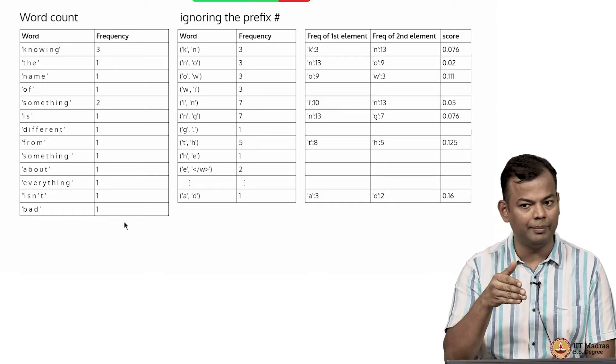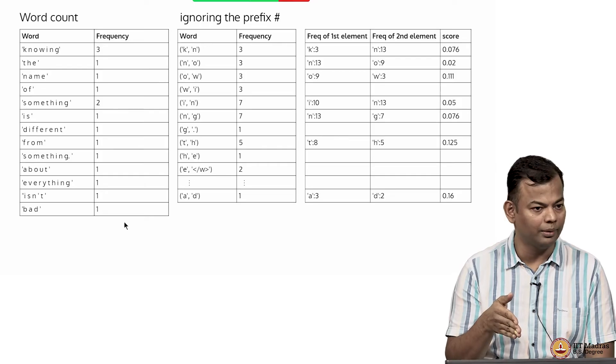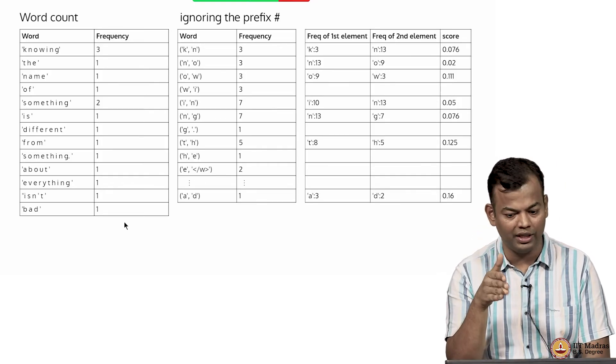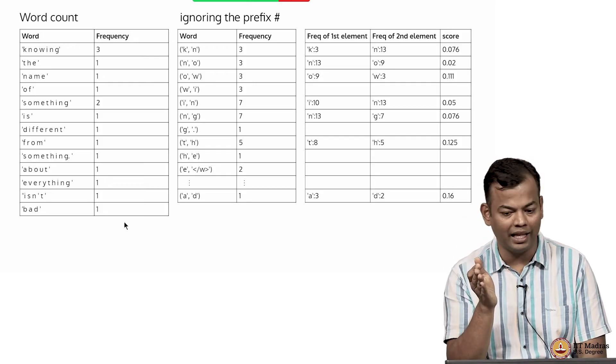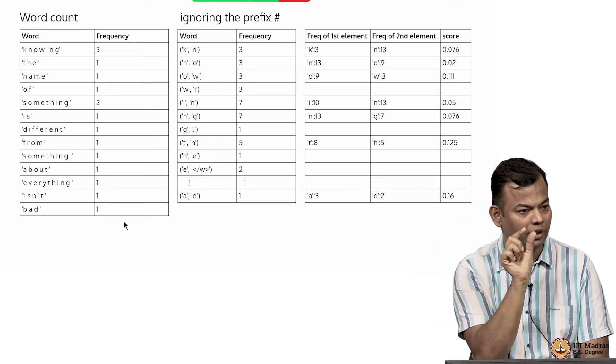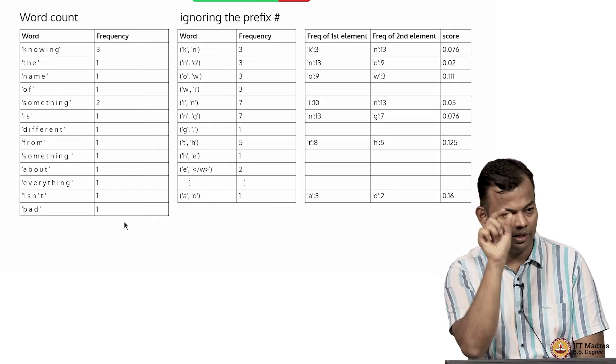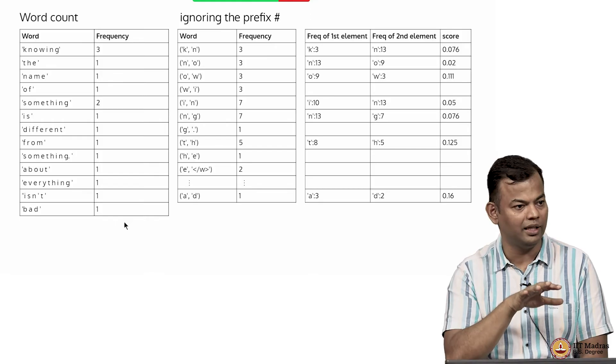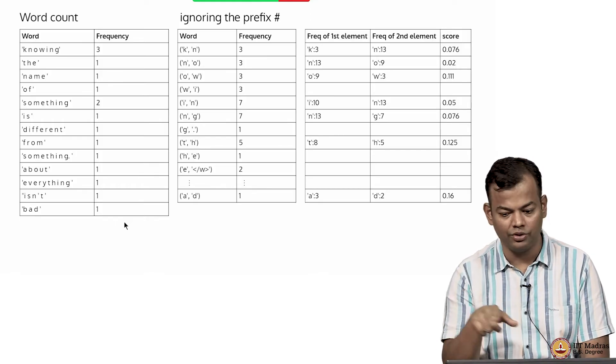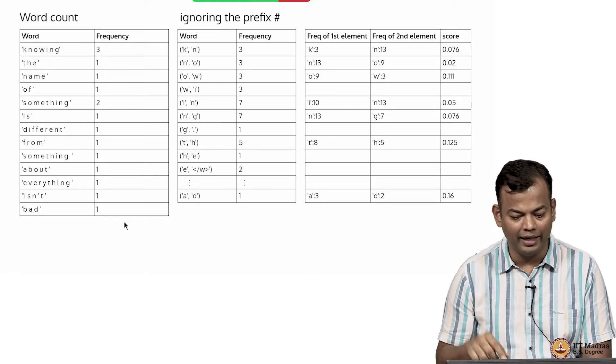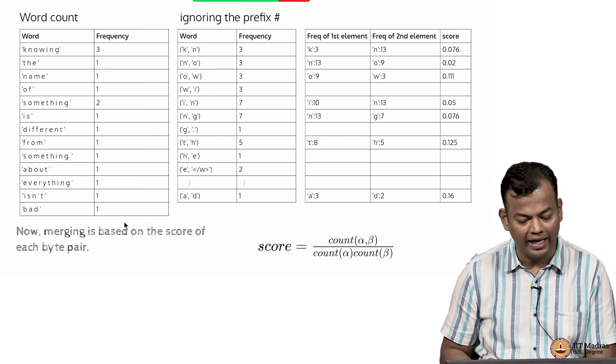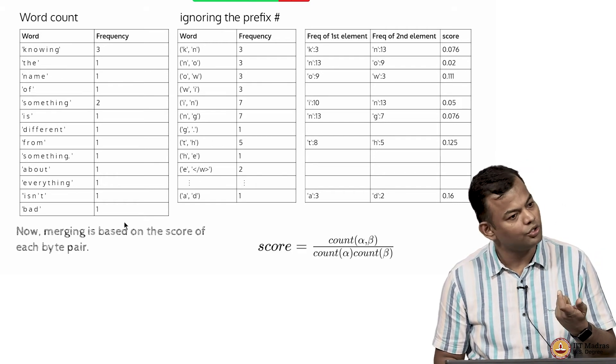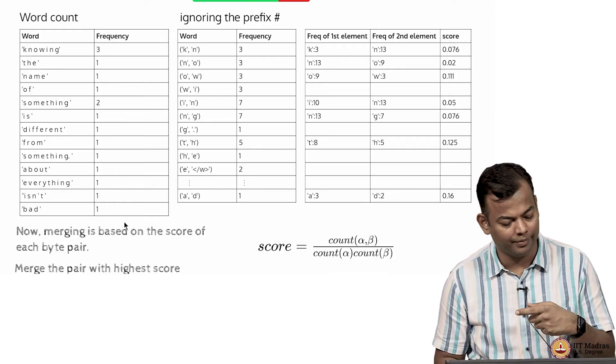If you look at BPE then you are only looking at the frequency column. Now in word piece you are looking at the frequency of the first element which was 3, frequency of the second element N which was 13, and now the score for the byte pair KN is going to be frequency of KN which is 3 divided by 3 into 13. You will take that token or that byte pair which has the highest score and add it to your vocabulary.